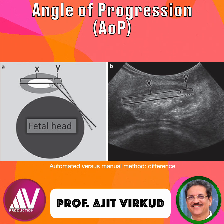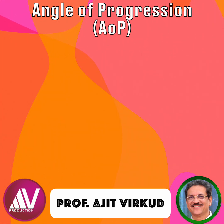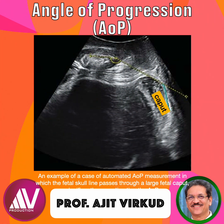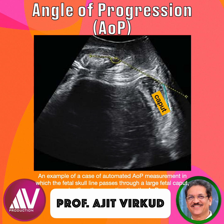There is one drawback of automated measurement. Here is an example of automated AOP measurement in which the fetal skull line passes through a large fetal caput, significantly overestimating the angle of progression. This can be avoided by manual measurement, which allows the operator to avoid the caput.